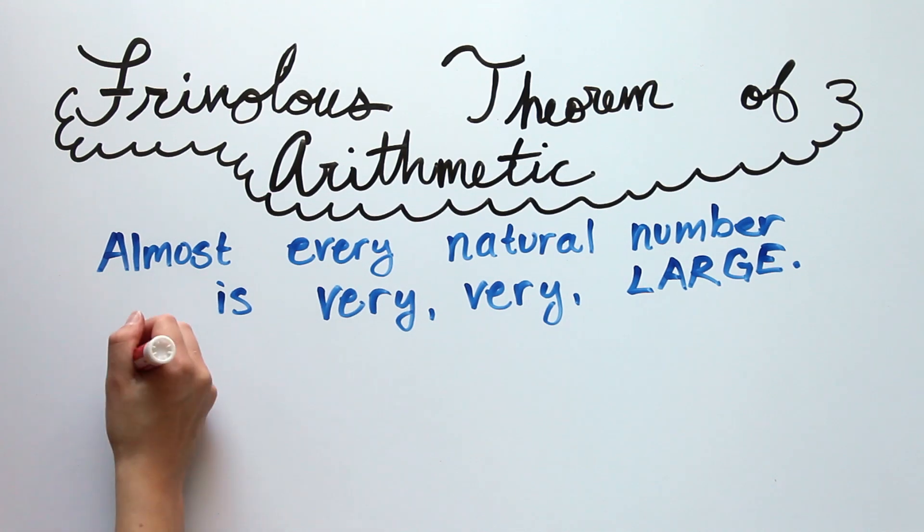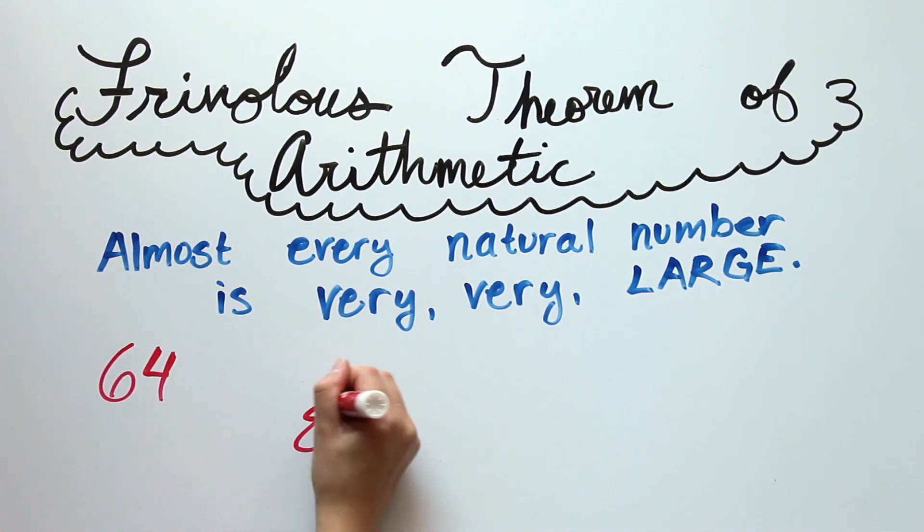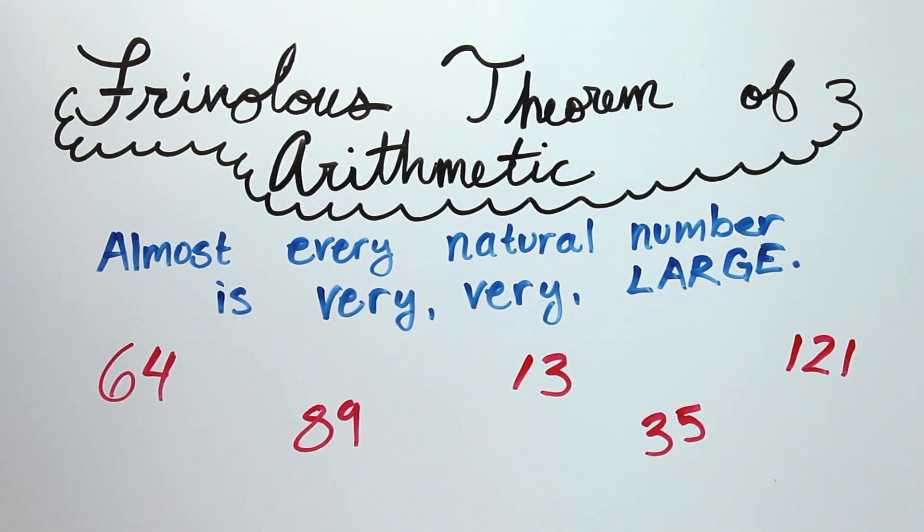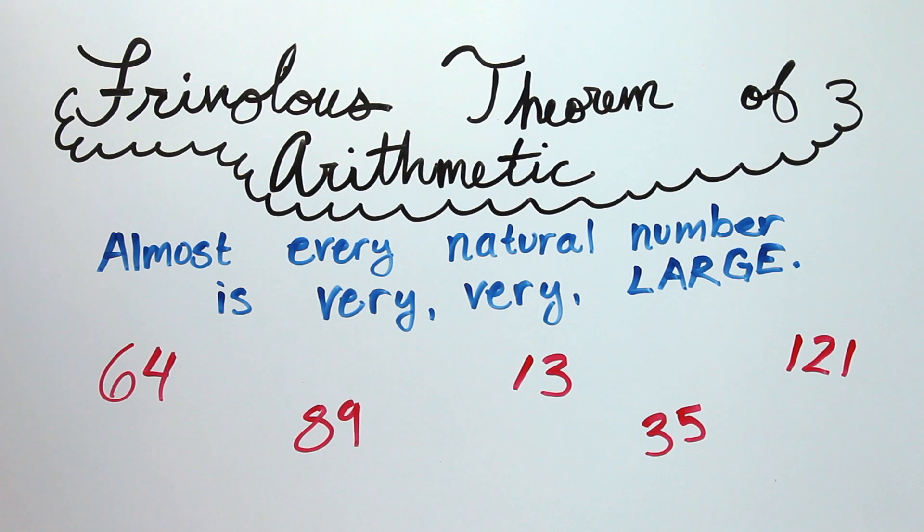I realized that you can say something interesting about most small numbers. Either it's a power of two, or it's a Fibonacci, or it's prime, or it's the product of two primes, or it's a palindrome. The list goes on.